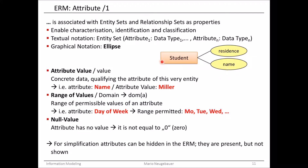As I mentioned, we can also have the textual notation, which looks like this. We have the entity set — here we would write 'student' — and we name the attributes and the data types of the attributes. In the graphical representation, we do not name the attribute type; we just write the attribute name. But in the textual notation, we can also write the data type.